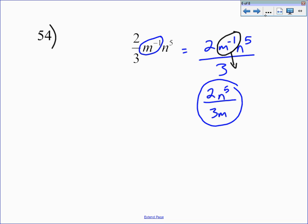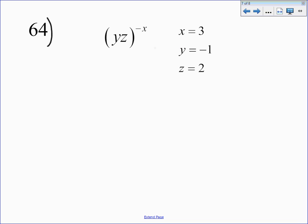The second example that I'm going to do with you is question number 64. It's (yz), which is inside parentheses, to the negative x power, when x equals 3, y equals negative 1, and z equals 2.